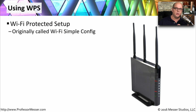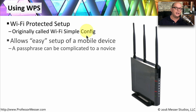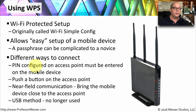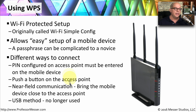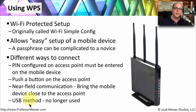Older wireless access points may have a feature called WPS, which stands for Wi-Fi Protected Setup, also formerly called Wi-Fi Simple Config. The idea is that you could easily set up devices by using a special WPS value to connect to the access point instead of using a complicated encryption and passphrase process. You could connect by using a PIN number assigned to the access point, by pushing a button near the access point, or through near field communication by bringing the mobile device close to the access point. There was also an older method using a USB key connected to your mobile device.